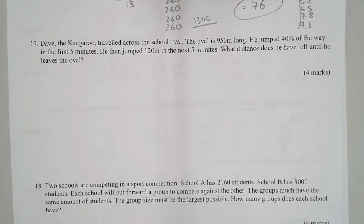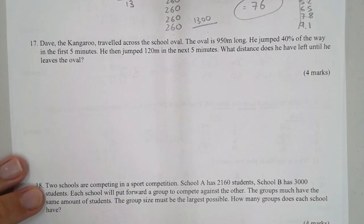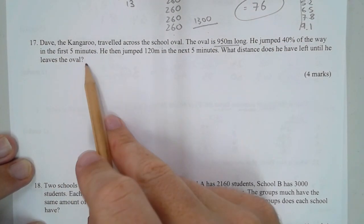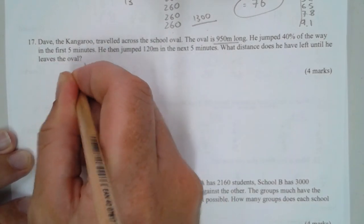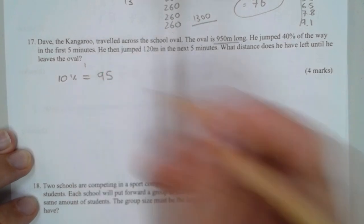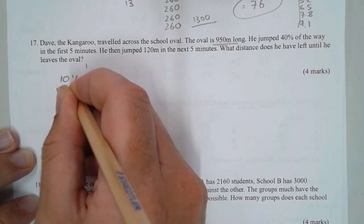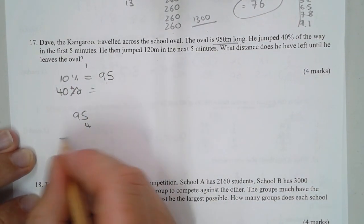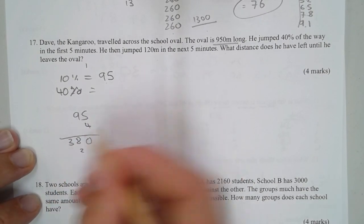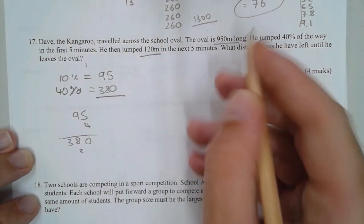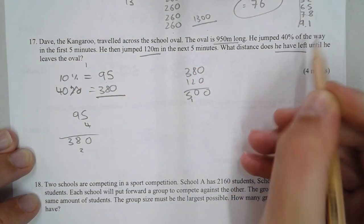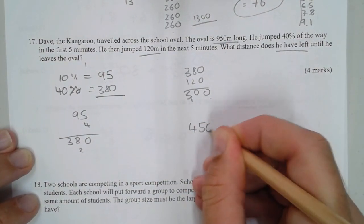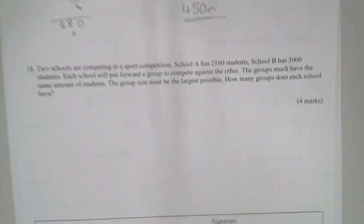Number 17: Dave the kangaroo traveled across the school oval. The oval was 950 meters long. He jumped 40% in the first five minutes, then 120 meters in the next five minutes. 10% of 950 must be 95 meters, so 40% must be 4 times bigger: 380 meters. He then jumped 120, so 380 plus 120 is 500 meters. He's got 450 meters left to go. Good on you, Dave.